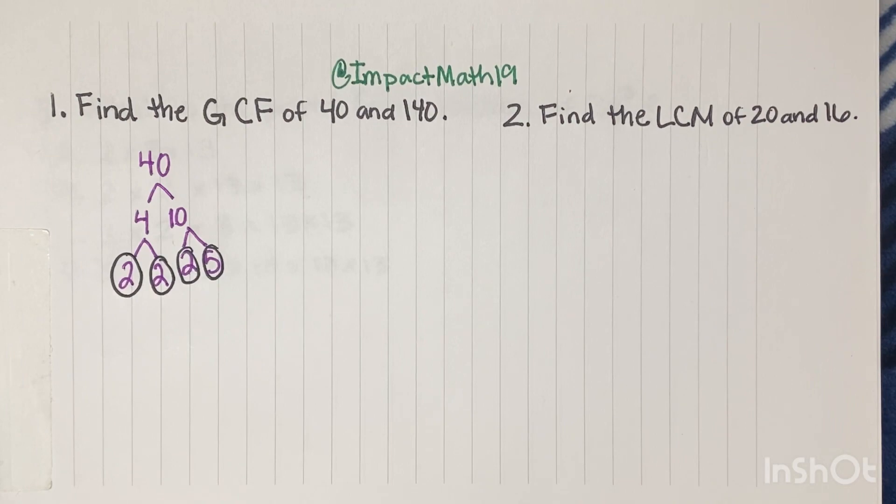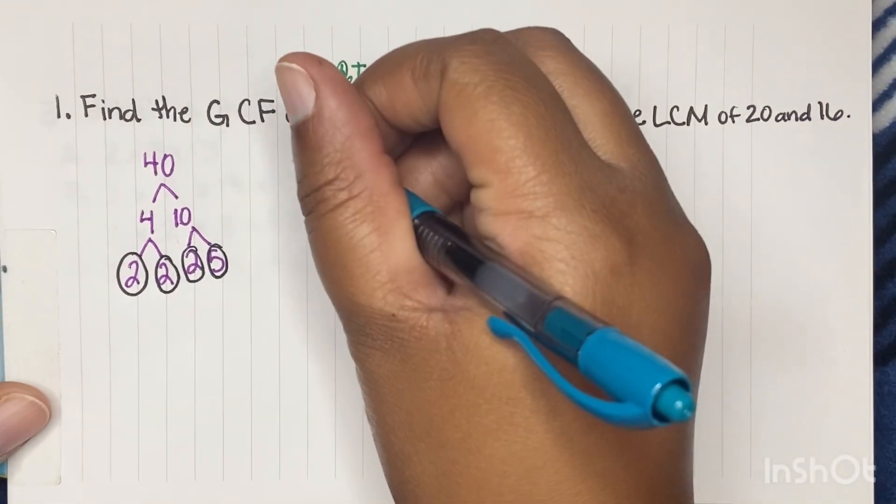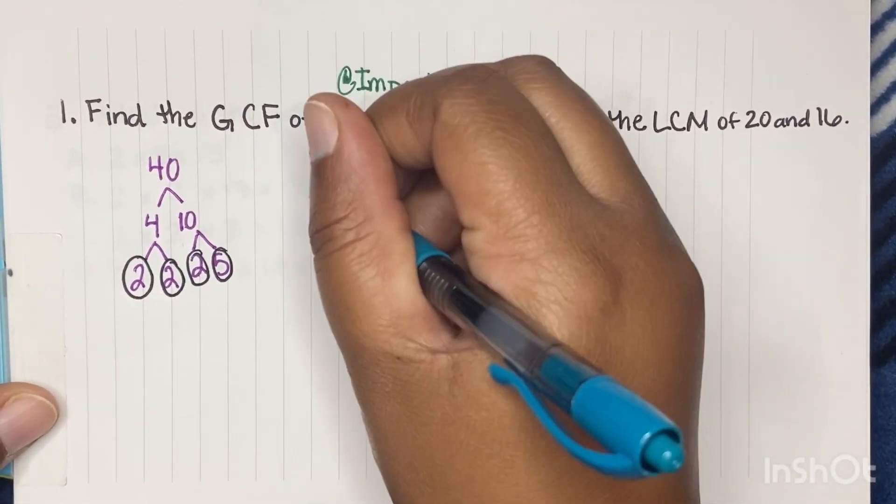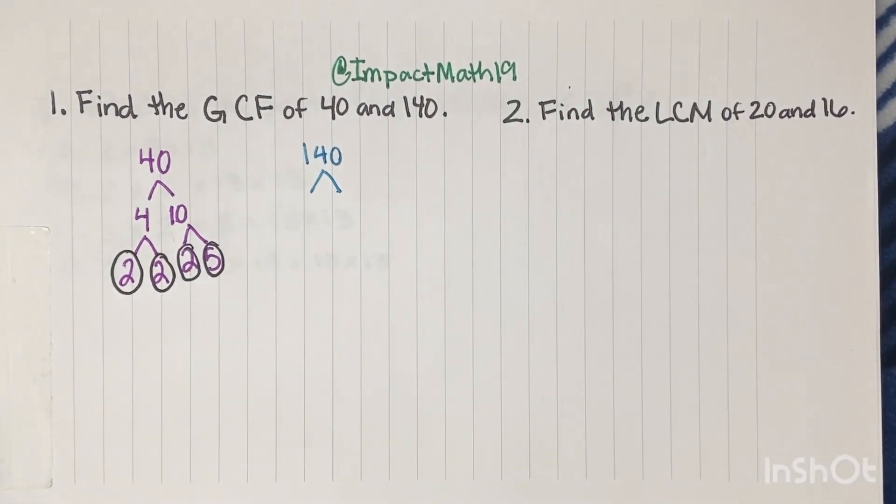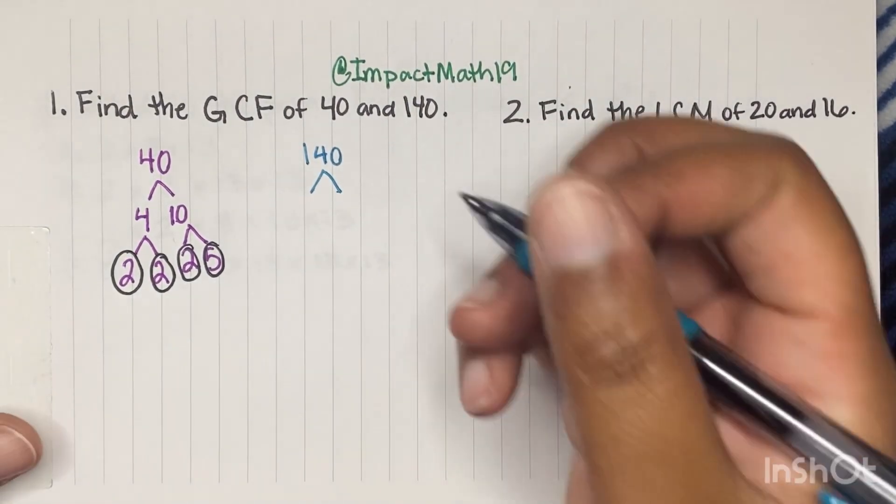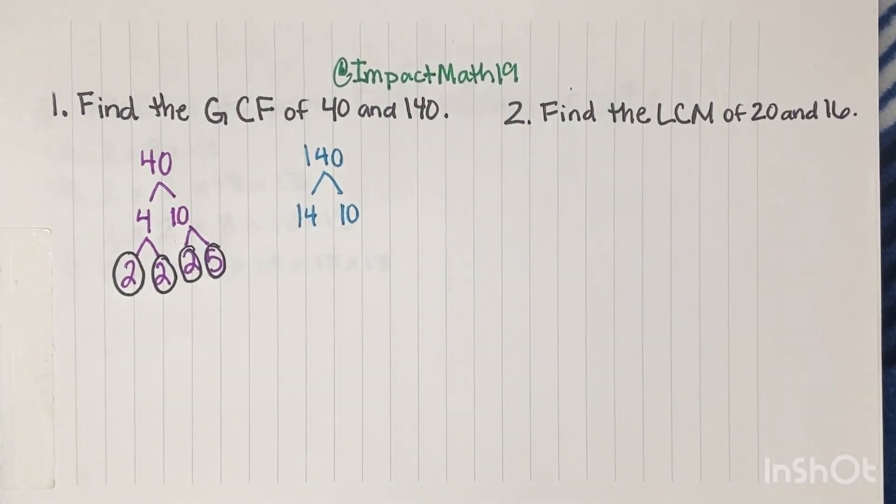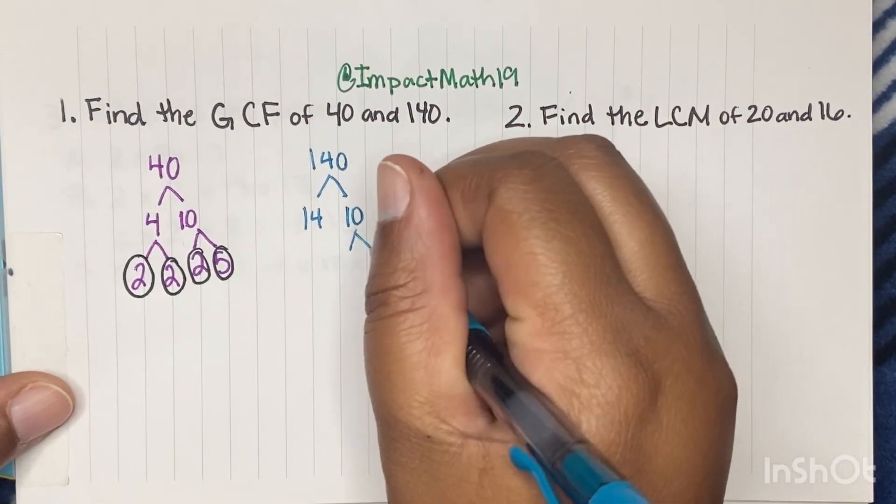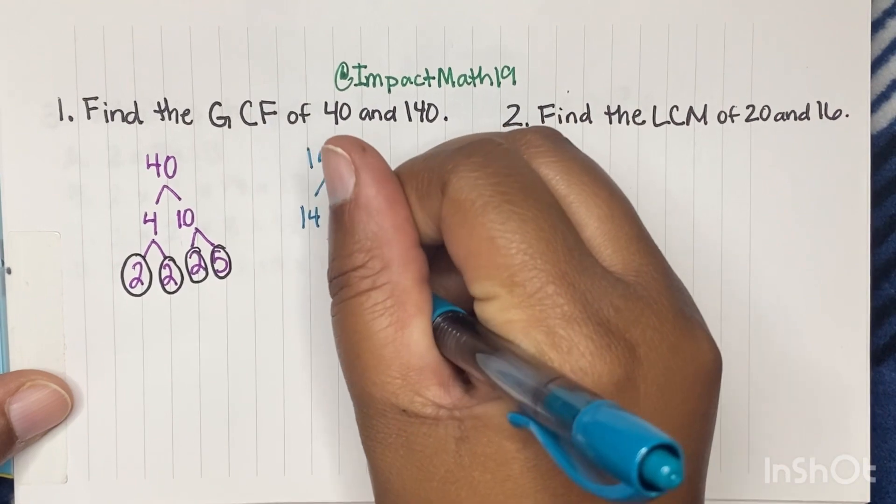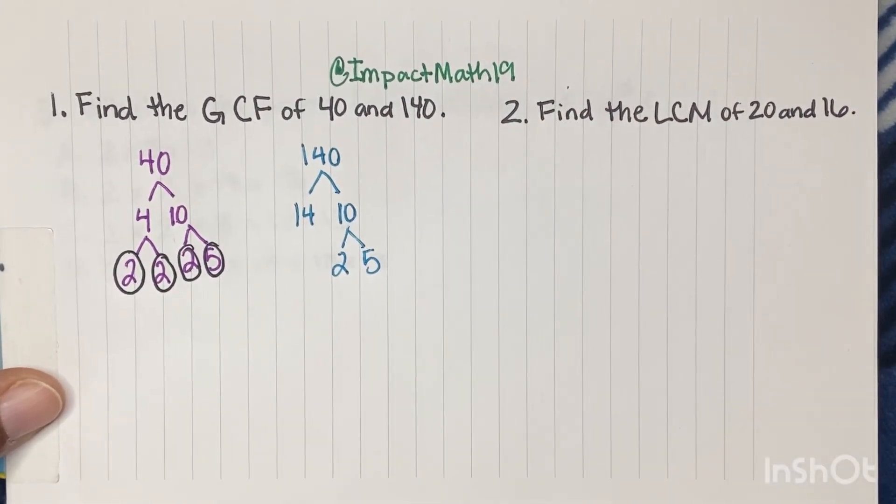Now let's jump to 140. So we have 140. And you got to ask yourself, what times what gets you 140? Well, 14 times 10 gets us 140. And we already know what 10 is because we just did it right here. We have a 2 and a 5, and those are primes.